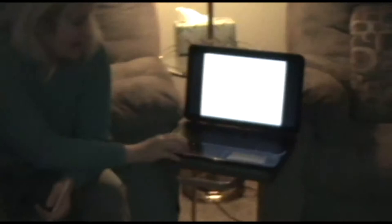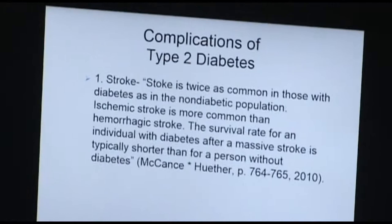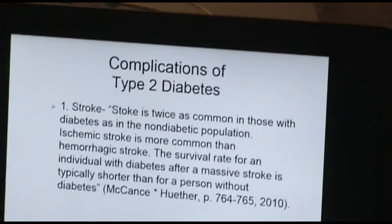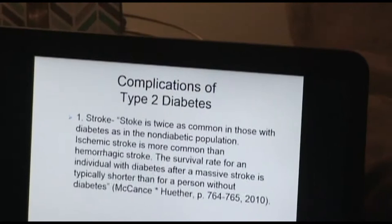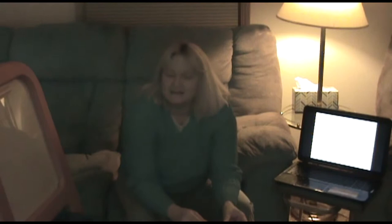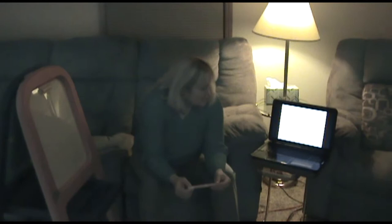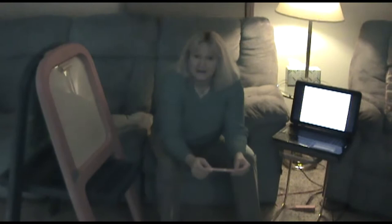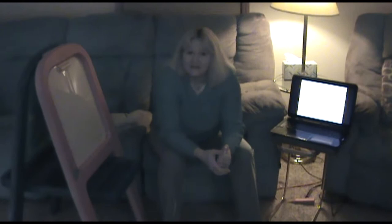The first complication is stroke. My dad has diabetes, and on May 2nd of this year he had a stroke. He was fortunate to recover — he's able to be at home with my mom's help, dress himself, and feed himself, which is a really good thing. Stroke is twice as common in people with diabetes as in the non-diabetic population. Ischemic stroke is more common than hemorrhagic stroke, and the survival rate after a massive stroke is typically shorter for a person with diabetes. Stroke can have lifelong effects on the patient.